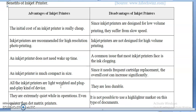Regarding disadvantages of inkjet printers: since they are designed for low-volume printing, they suffer from slow speed — not as fast as laser printers or dot matrix printers. They are not designed for high-volume printing; you can take up to 500–600 pages with one cartridge. A common issue is ink clogging — when not in use for a long time, ink clogs between the cartridges.